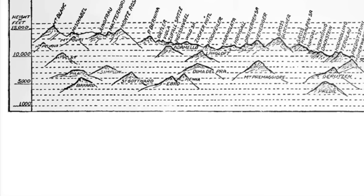Just to put it in some context for you, this is the profile of the highest mountains in the Alps, so we're kind of along this level. St Gothard is a couple of thousand feet higher; Predill is around about the 5,000 feet level. So we're talking around about that sort of height.